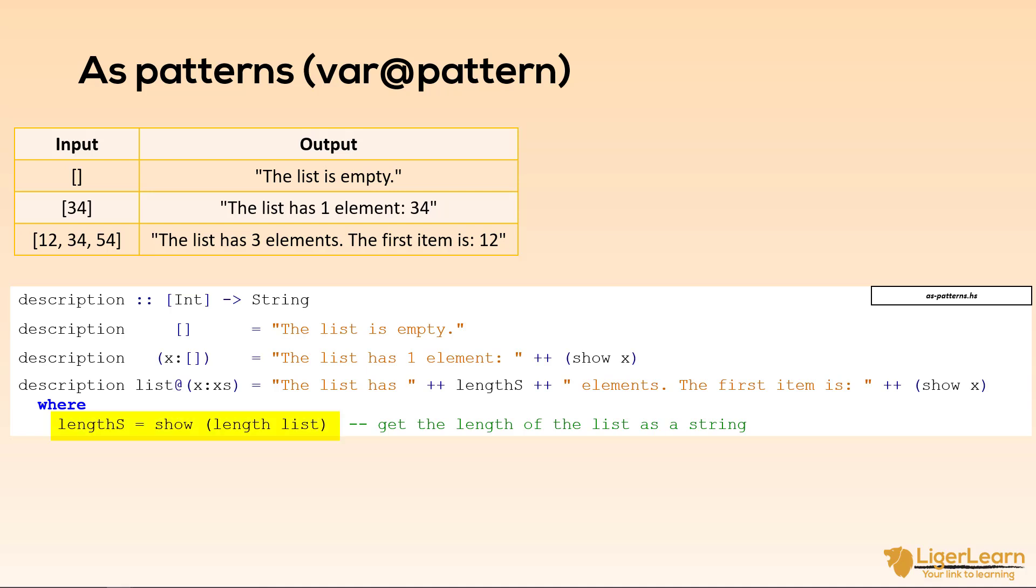We make use of a where clause to define a value which I have called lengthS. This is the number of items in the list as a string. We use the length function to get the number of items but it is an int so we use the show function to convert it to a string. Notice how we are using the variable name list to refer to the whole list which we defined using our as pattern.